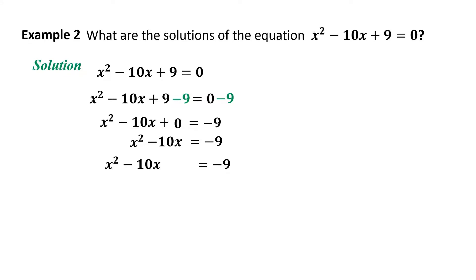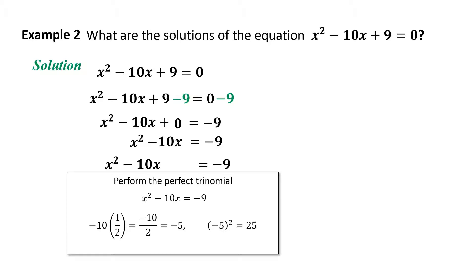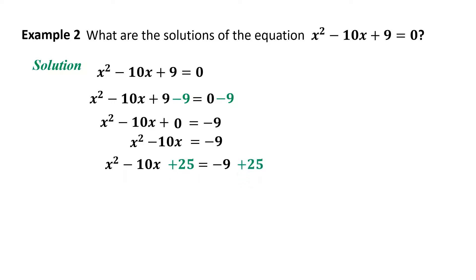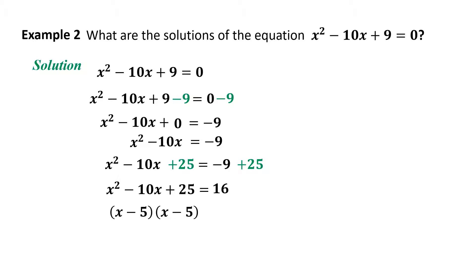We will transform the equation into a perfect square trinomial. The third term is 25. We add 25 to both sides of the equation. The equation is x² - 10x + 25 = 16, since -9 + 25 = 16.